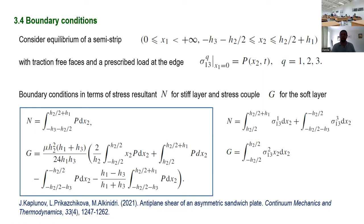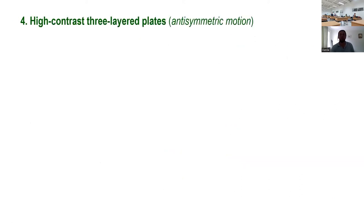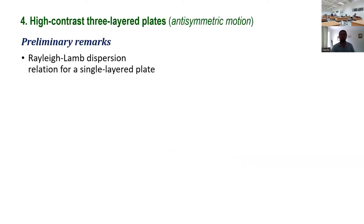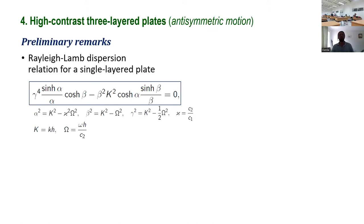I think we have covered everything I wanted to say about scalar problems. It is time to move to vector problems of elasticity and see how the methodology is developed there. Just a few preliminary remarks: the classical Rayleigh-Lamb dispersion relation for a single layered plate in case of anti-symmetric motion is derived in the usual way — it is a dispersion relation for an infinite layer of thickness h.